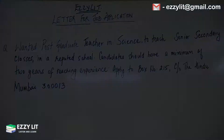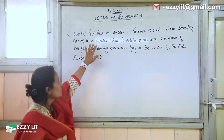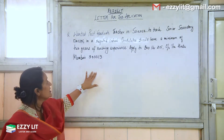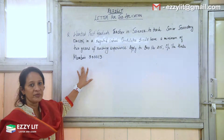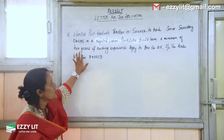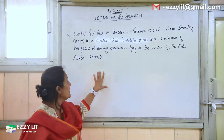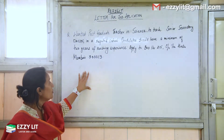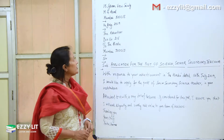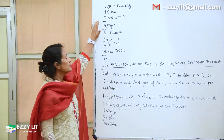We take a sample question: 'Wanted — postgraduate teacher in science to teach senior secondary classes in a reputed school. Candidates should have a minimum of two years of teaching experience. Apply to Box Number 215, care of The Hindu, Mumbai 300013.' So we start with the address — that is the sender's address.